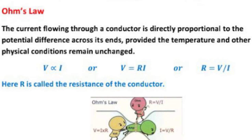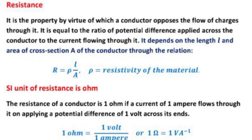Then R is equal to V upon I. R is called the resistance of the conductor. Resistance is the property of the material by which a conductor opposes the flow of charges through it. It equals the ratio of potential difference applied across the conductor to the current flowing through it. Resistance depends on length and area of cross-section of the conductor: R equal to rho L upon A, where rho is the resistivity, L is the length, and A is the cross-sectional area.